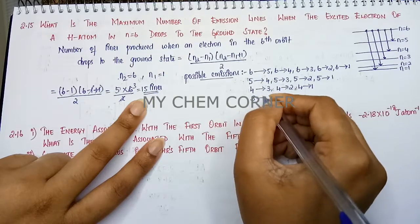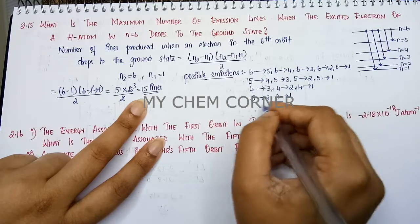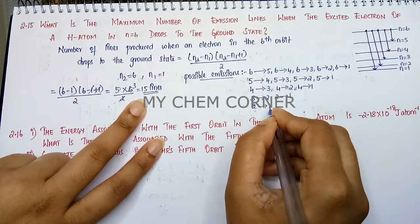Similarly when it comes somewhere 4 to 3, it can further go down from 3 to 2, and 2 to 1. When it is from 2 to 1 it can fall here. All right.